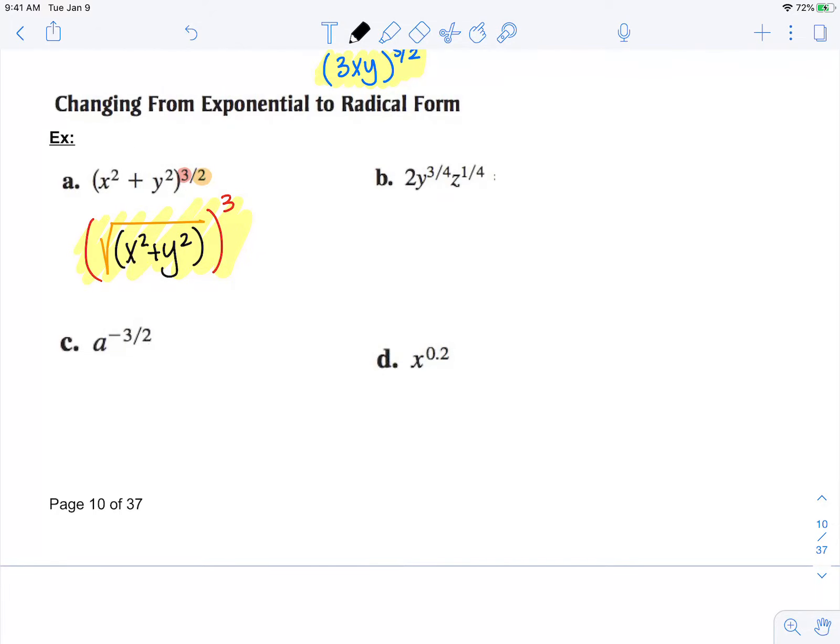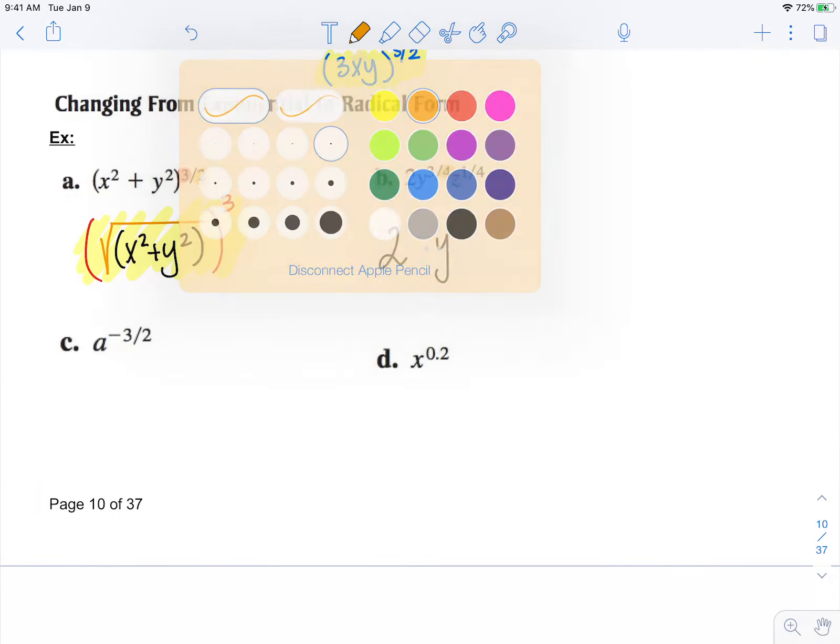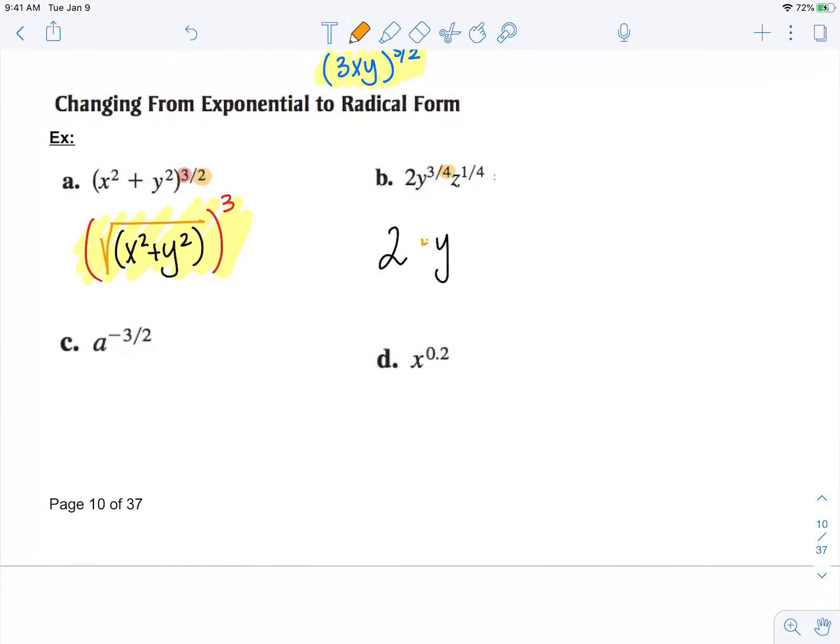The two is not being raised to a power, so it stays my coefficient. But the y - the denominator is the index of my root, so that means this is going to be the fourth root of y.